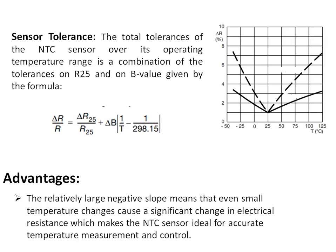Sensor tolerance represents the variation of the NTC sensor over its operating temperature range, and it is a combination of the tolerance on R_25 (the base resistance) plus the B value tolerance. The total change in resistance equals ΔR_25/R_25 combined with the B constant tolerance. In the ideal case this delta R should be flat, but in practice the sensors will have a certain slope. An important advantage of the thermistor is its large negative slope — a small change in temperature causes a significant change in resistance that can be accurately measured by the corresponding electronics.